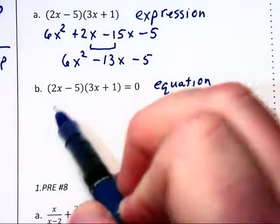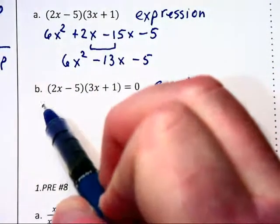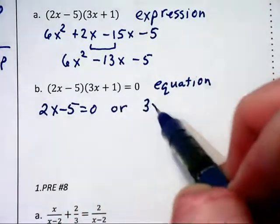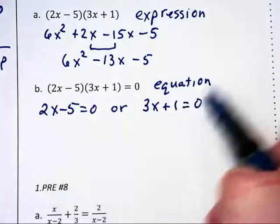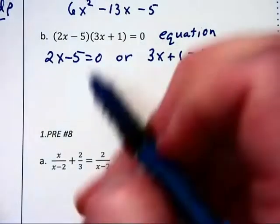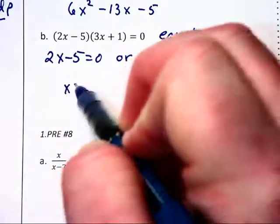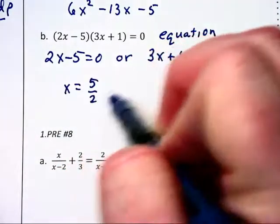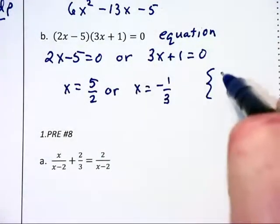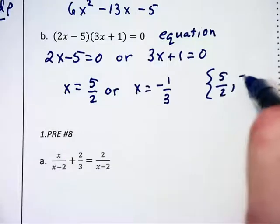So we are going to use the zero product property and write 2x - 5 = 0 or 3x + 1 = 0. Solving these two linear equations separately, we have x = 5/2 or x = -1/3, and the solution set contains those two values.